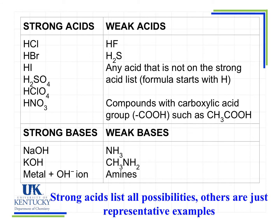The majority will stay intact as HF molecules, or a weak base such as NH3 will stay as NH3. Only a small portion will form ions. This table summarizes what we've seen about strong and weak acids, strong bases, and weak bases, and helps you identify which one falls into which category.